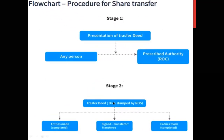This slide shows the procedure for share transfer. This is not mentioned in your textbook, but I felt it is important for you to know how a share transfer is made, so I have added it as extra knowledge. Stage one is the presentation of the transfer deed. A transfer deed is made by anyone who wishes to transfer shares to another person, and they require a legal authority — the prescribed authority being the Registrar of Companies — who helps in making the transfer deed.